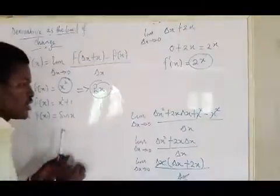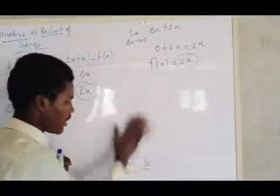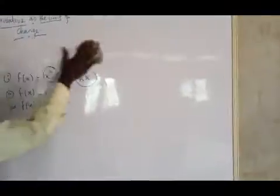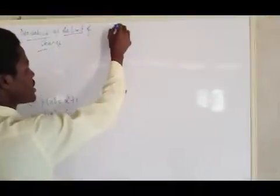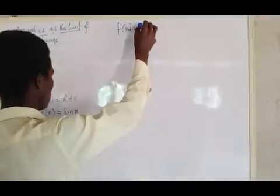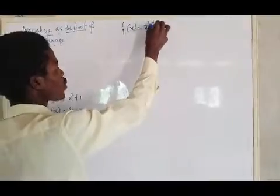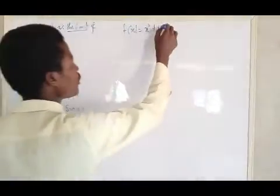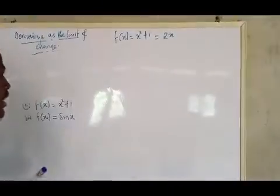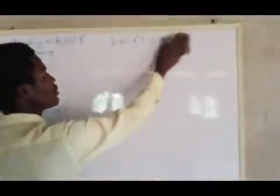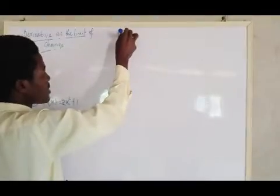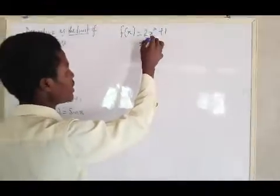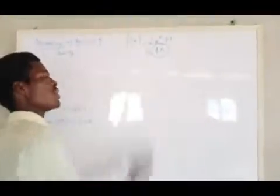The way I did the first example is the same way I'm going to do the second example. Our second example is f of x equals 2x squared plus one. You will notice that if you differentiate 2x squared plus one, what will you get? You will get 4x. That means my answer should be 4x.